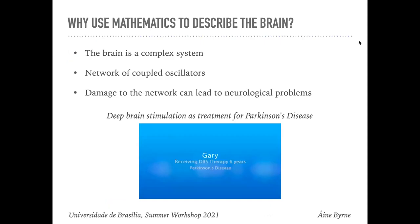To begin, I'll give some motivation for why we would want to use maths to study the brain. The brain is a complex system made up of around a hundred billion interconnected neurons, and each neuron can be viewed as an oscillator. So the brain is really just a large network of coupled oscillators. Damage to this network can lead to neurological problems, but because there are so many neurons, the brain can learn to do things using a different set of neurons. This mechanism of self-learning and retraining isn't well understood, but if we understood it, we could develop treatments for diseases.